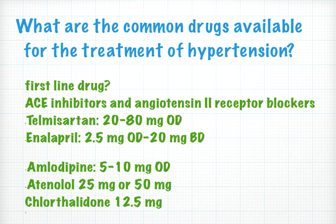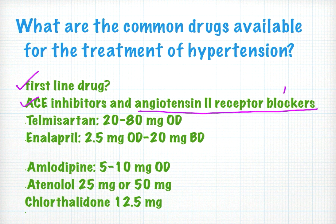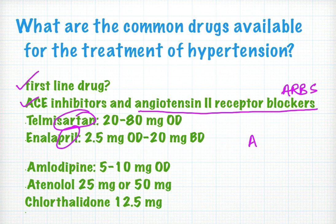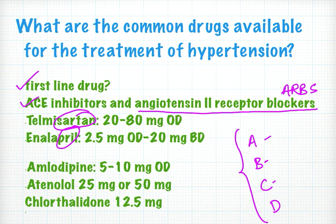Common drugs for hypertension treatment — mostly first-line — can be remembered with the acronym ABCD. A stands for angiotensin antagonists, including ACE inhibitors (all PRILs) and angiotensin receptor blockers or ARBs (all SARTANs). B stands for beta blockers, example atenolol. C stands for calcium channel blockers, example amlodipine. D stands for diuretics, example chlorthalidone.